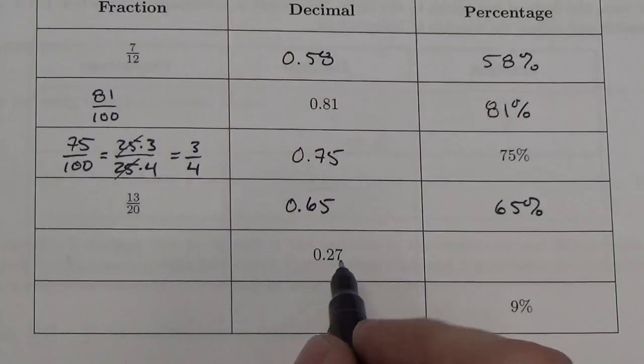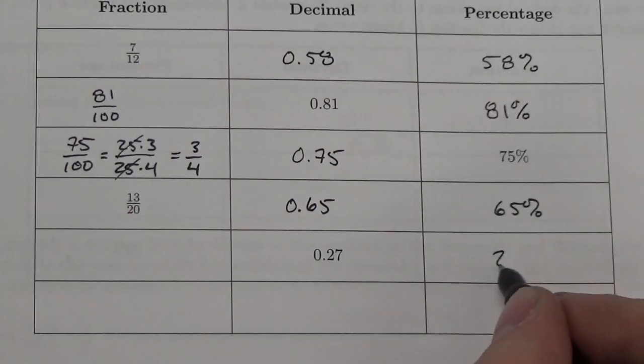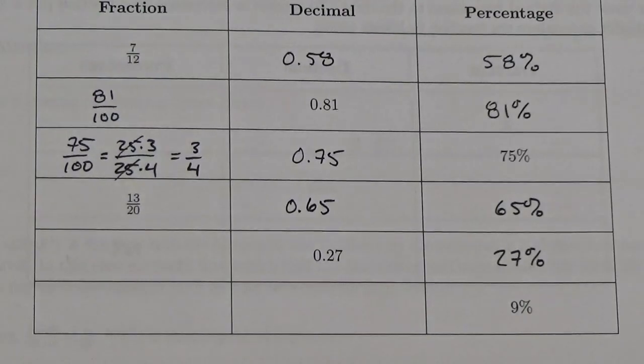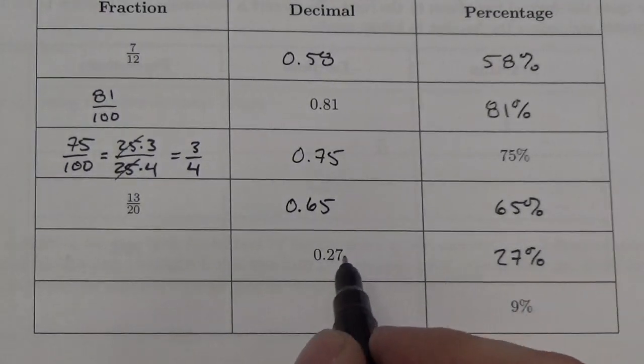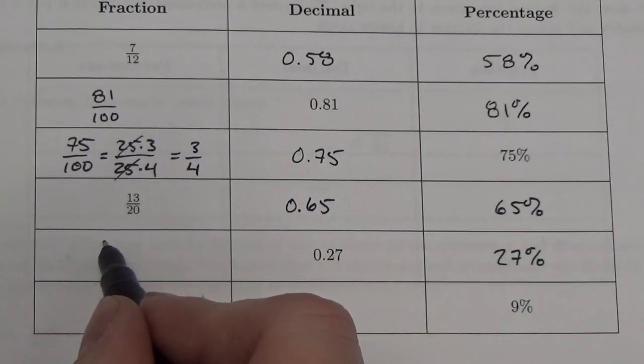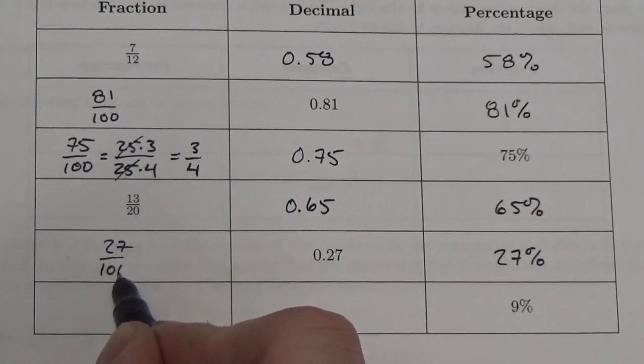Well, now, let's go here. If I give you 0.27, well, once again, let's do the easy one first here. That becomes 27%.